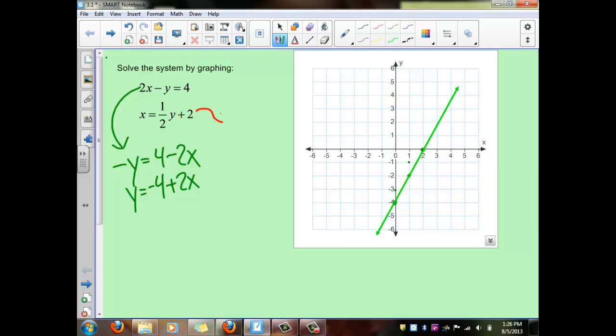Now if we look at this second one and solve for y, we'll have x minus 2 equals 1 half y. If we multiply both sides by 2 to get rid of our fraction, we'll have 2x minus 4 equals y. Notice that these are the same thing, and when we graph them, it'll actually end up being that same line.